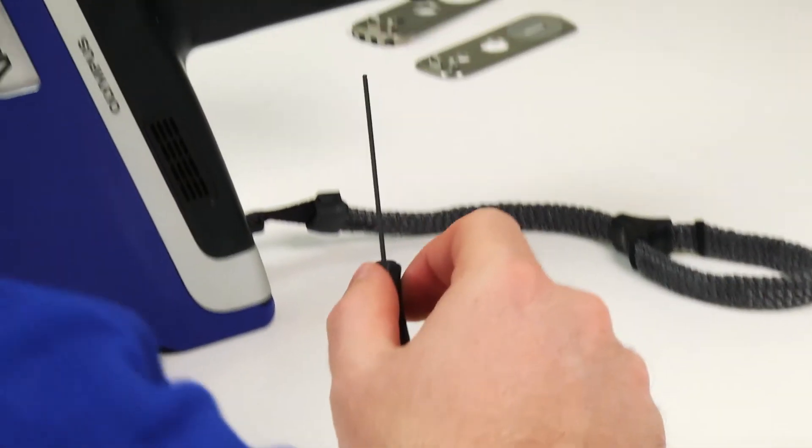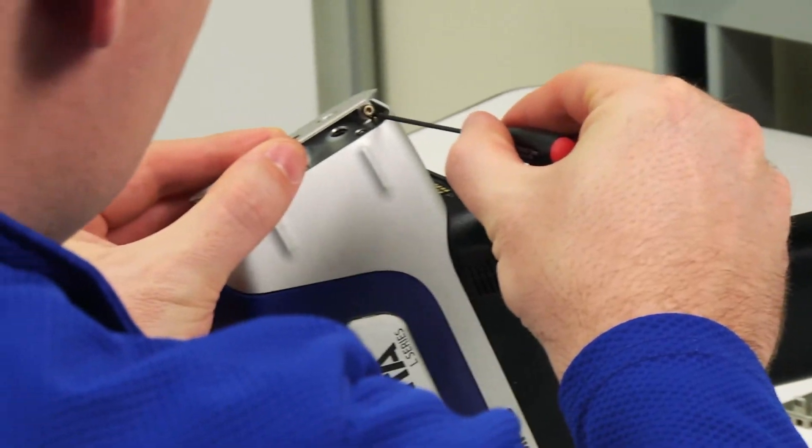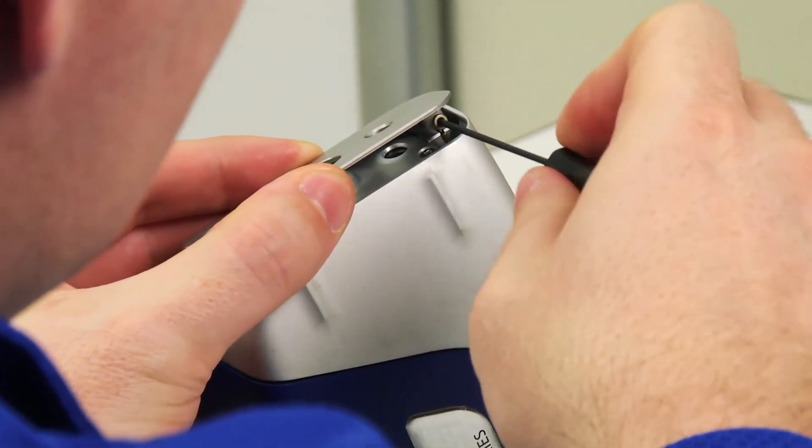Use the allen wrench supplied with the hot heel to remove the screw holding the tether to the faceplate. Be careful not to lose the screw or the washer.